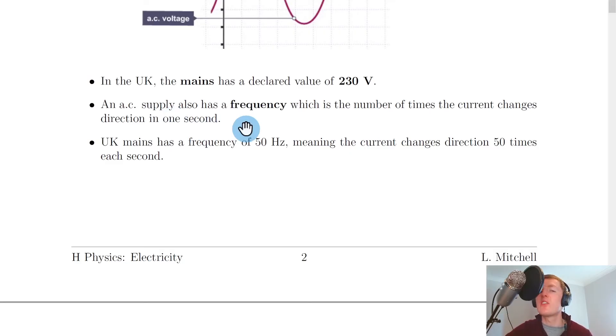And because the AC signal is a wave, we can say that an AC supply also has a frequency, which is the number of times the current changes direction in one second. For example, the UK mains has a frequency of 50 hertz, meaning the current changes direction 50 times each second.